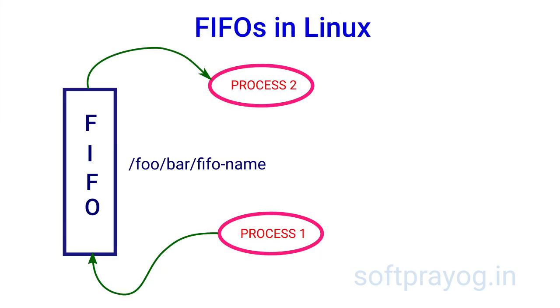So what is a FIFO? A FIFO is a named pipe. It is a name like a file in the file system and fundamentally it is a pipe.